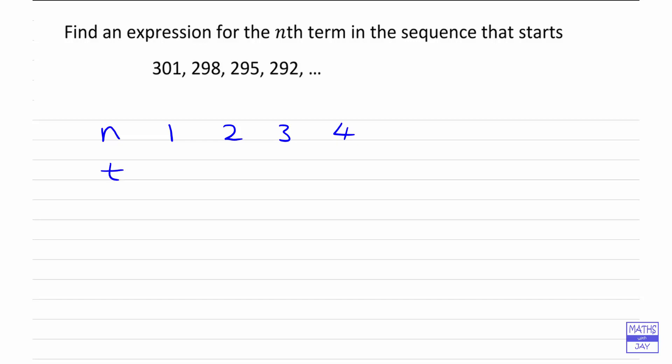For the term we'll use t. We've been given that the first term is 301, the second term 298, the third term 295, and the fourth term 292.